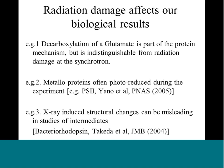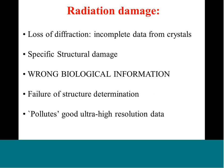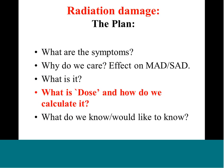In summary, what we see is a loss of diffraction, specific structural damage, we can end up with the wrong biological information, and our structure determination can fail. A few radiation-damaged images can really pollute the electron density map.